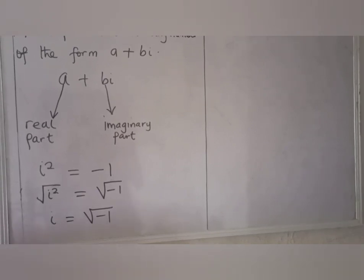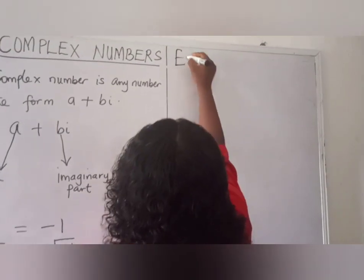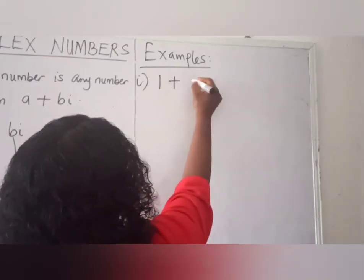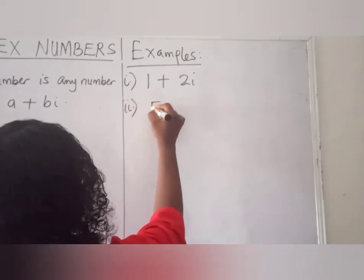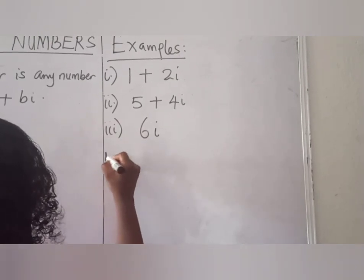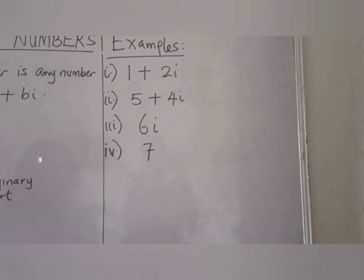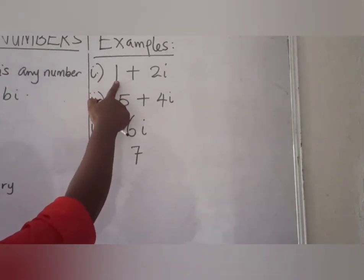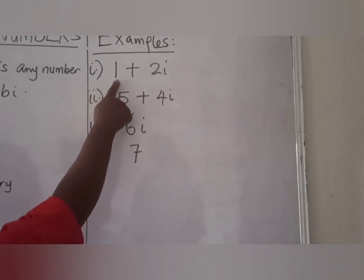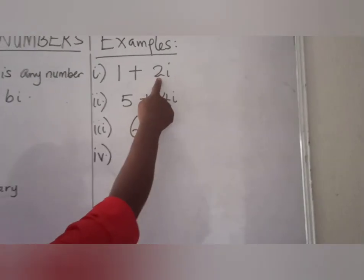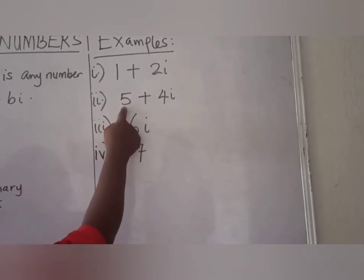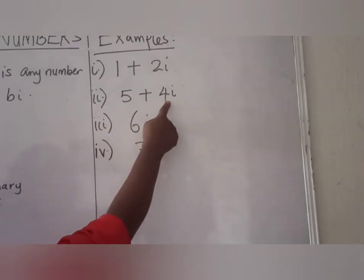Let's take a few examples of complex numbers. The first one is 1 plus 2I, and the second one is 5 plus 4I. In the first example, 1 plus 2I: 1 is the real part of the complex number, and 2 is the imaginary part. In the second example, 5 plus 4I: 5 is the real part of the complex number, while 4 is the imaginary part.